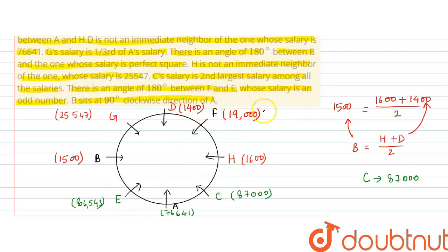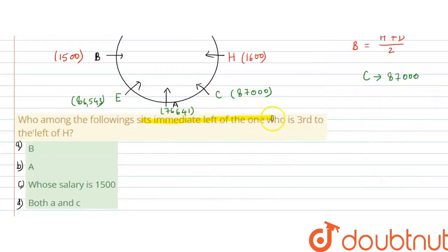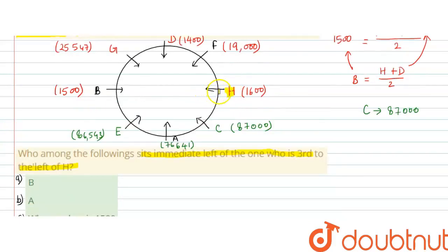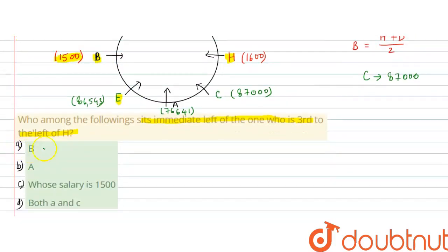Looking at the final arrangement, option B is wrong. Option C — the person whose salary is 1,500 — is correct. So option D, both A and C, is the right answer. Hope this question is clear to all. Thank you.